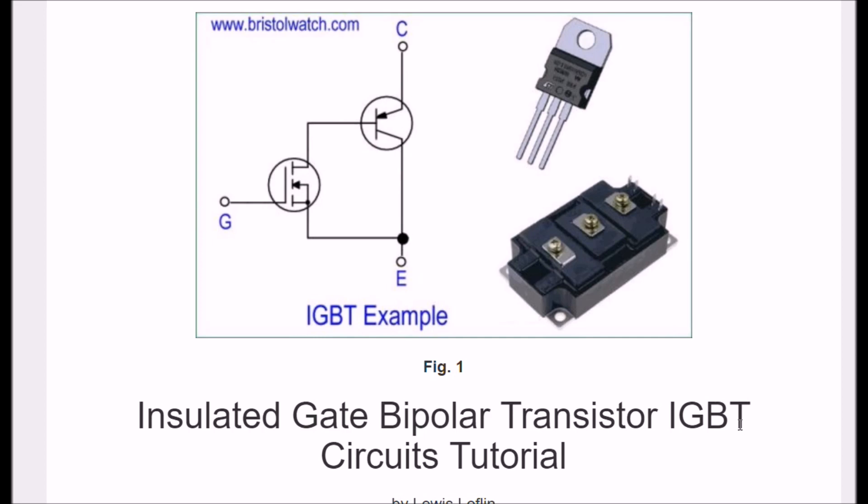Insulated gate bipolar transistors, also known as IGBTs, are a circuit that we should be aware of. It can be used for high-speed switching, voltage choppers, power supplies, and H-bridge motor controls. This is your host, Lewis Laughlin. Visit my website at www.bristolwatch.com.